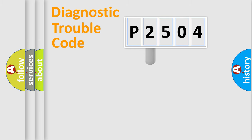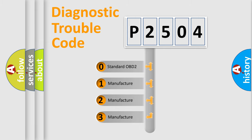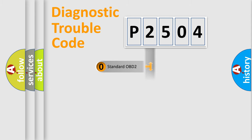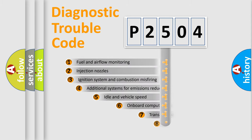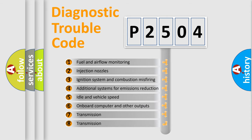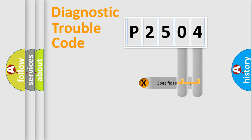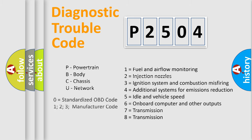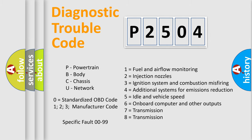This distribution is defined in the first character of the code. If the second character is expressed as zero, it is a standardized error. In the case of numbers 1, 2, or 3, it is a more specific expression of a car-specific error. The third character specifies a subset of errors. The distribution shown is valid only for the standardized DTC code, and only the last two characters define the specific fault of the group.